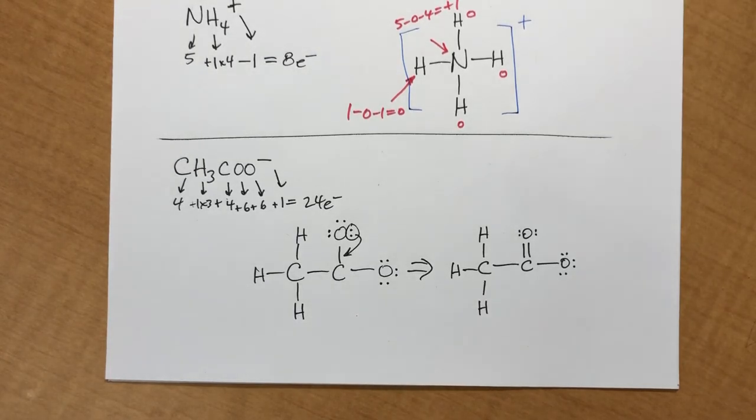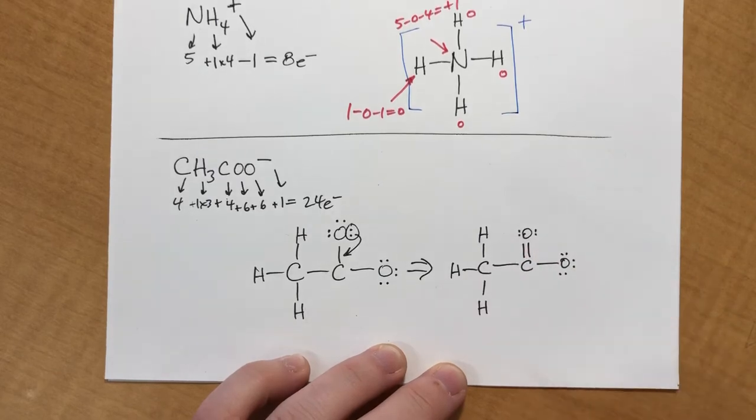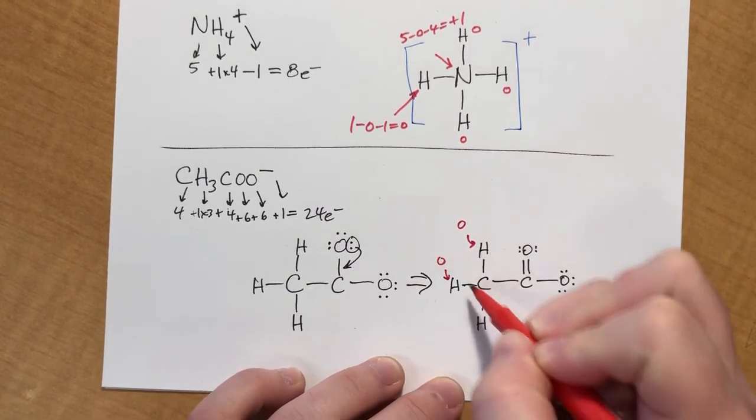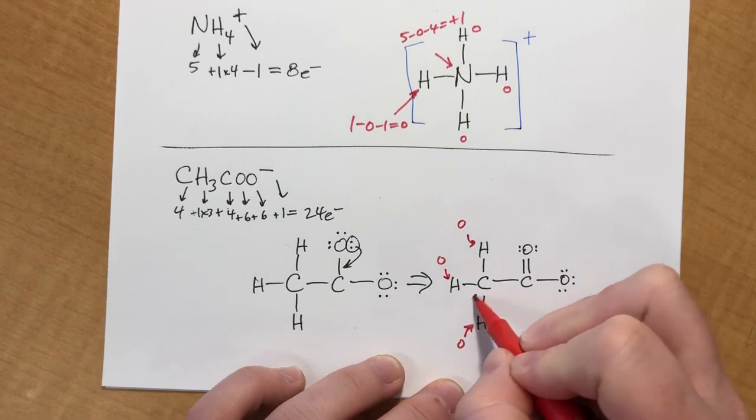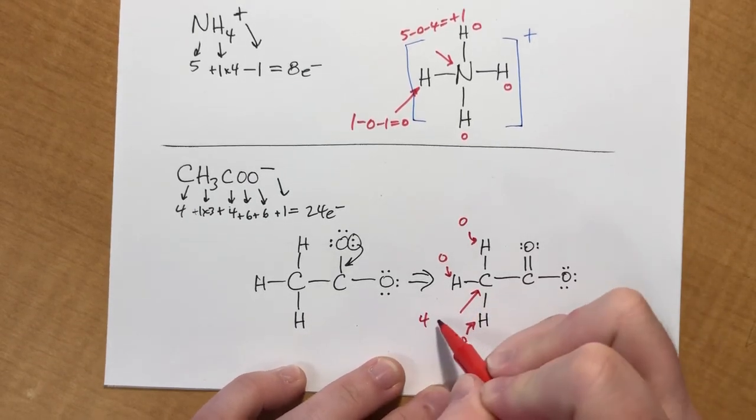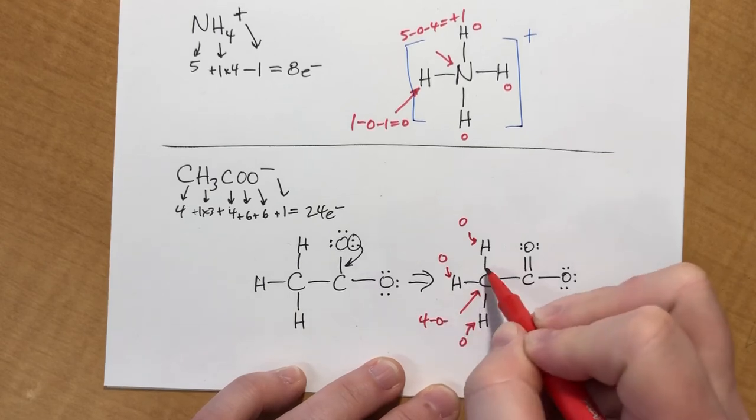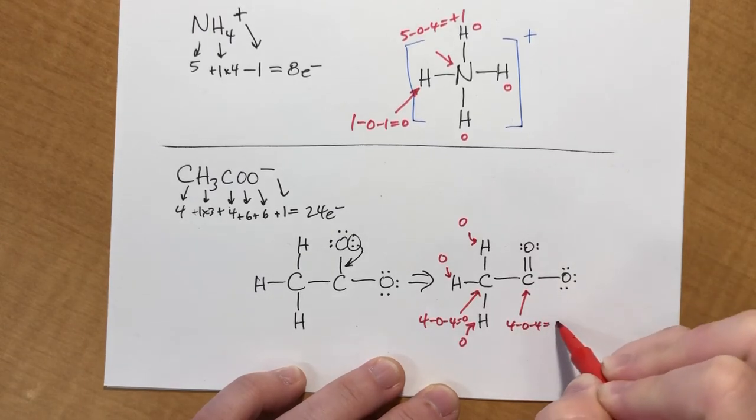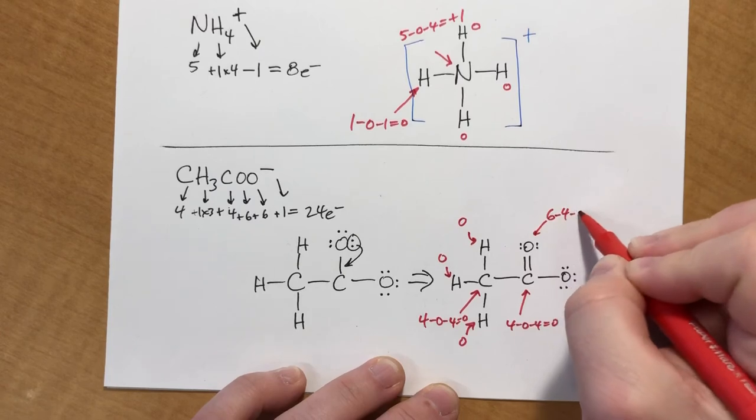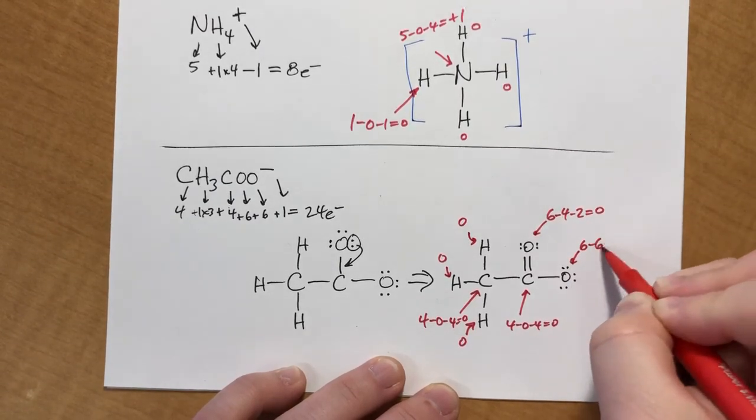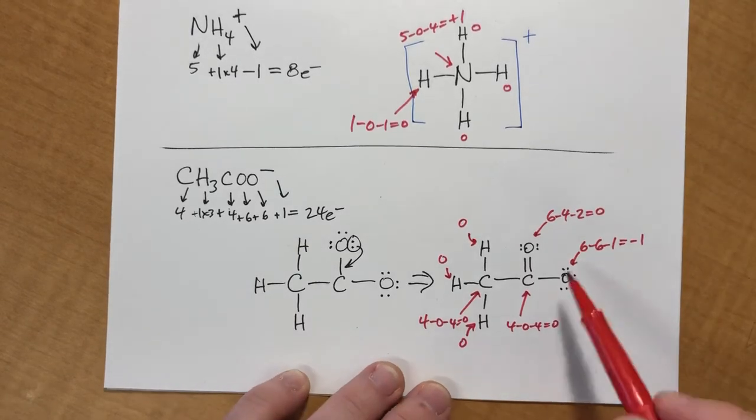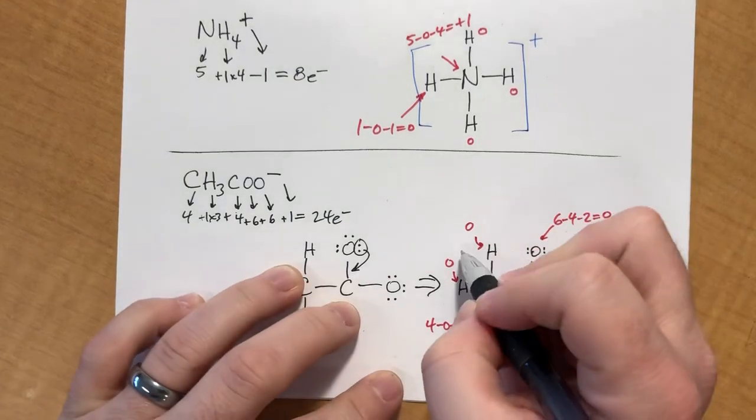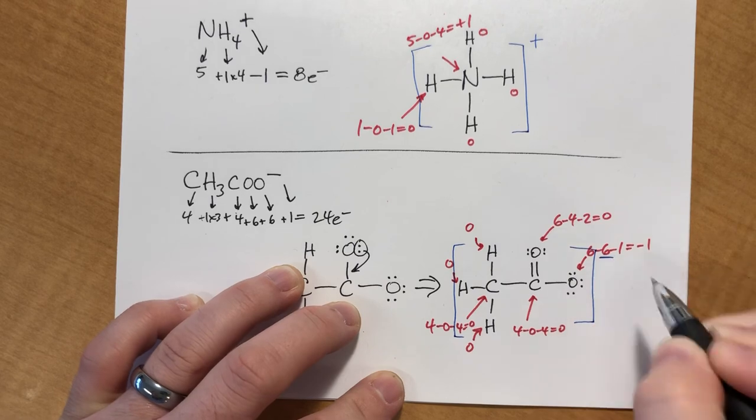So now we're gonna check our formal charges, because everything's got an octet at this point. The hydrogens, if they have one bond, it's gonna be zero. This carbon has four valence electrons minus zero dots minus one, two, three, four bonds would be also zero. This carbon is four minus zero minus four is zero. This oxygen is six minus four minus two is zero. And this oxygen is six minus six minus one is negative one, which is fine because it has to add up to a negative one charge. So this thing gets a bracket, and its overall charge is negative one.